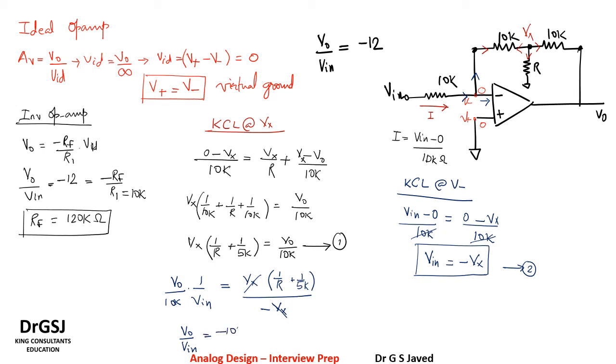This statement can be rewritten as V naught by V in equal to minus 10K times 1 over R plus 1 over 5K. Now this is equal to 12 as they have given in the equation as minus 12. Now we have got these two equations, let us simplify the two equations. This will get reduced.